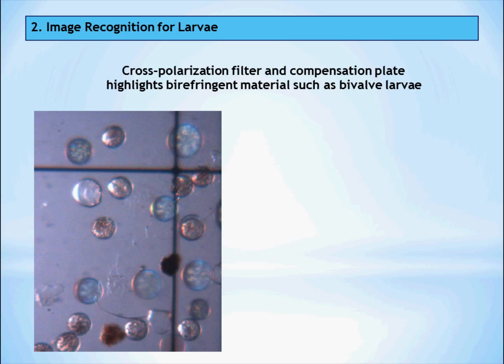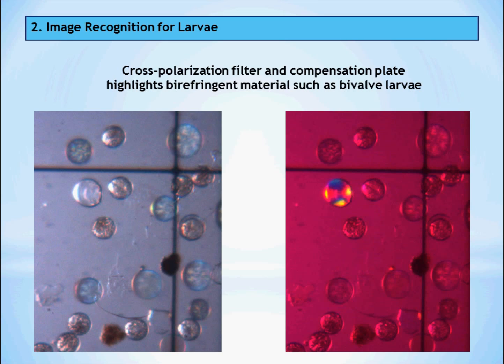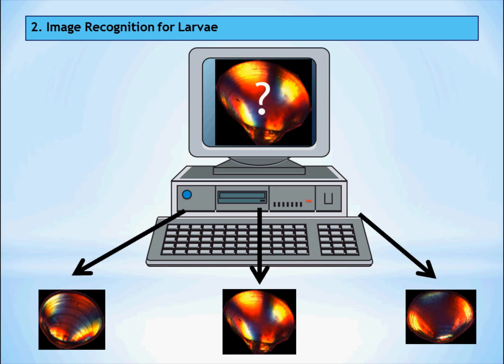Can you spot the bivalve in this photo? We use a technique called shell beat to distinguish oyster larvae from other things and to categorize them from other bivalves. Each bivalve species has a unique pattern that is emitted by its shell, so we can use pattern recognition software to identify oyster larvae and other bivalves.